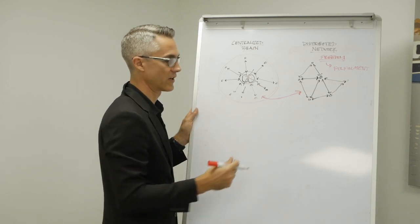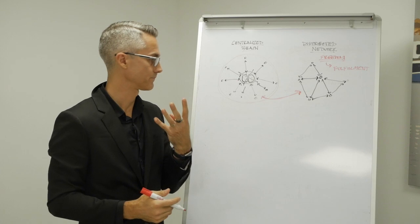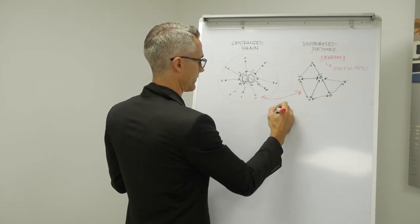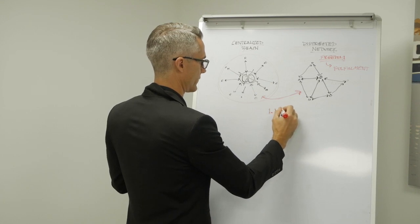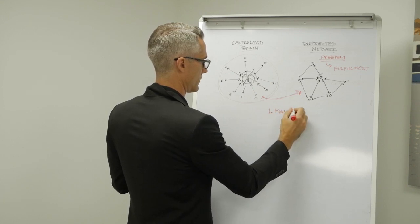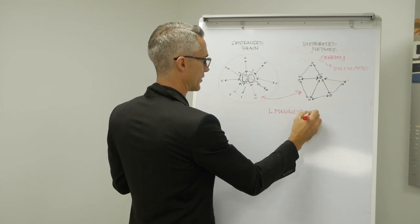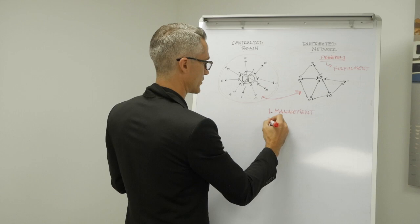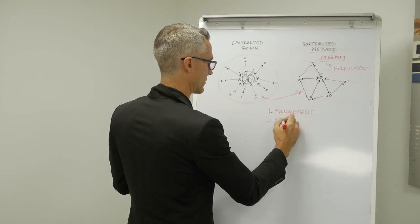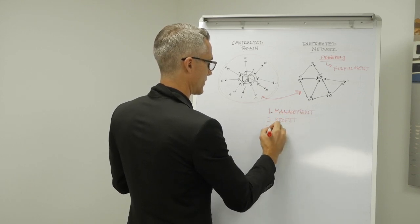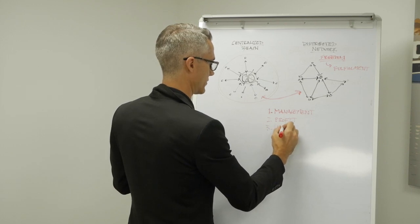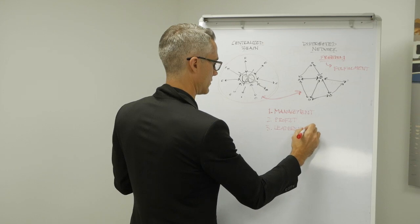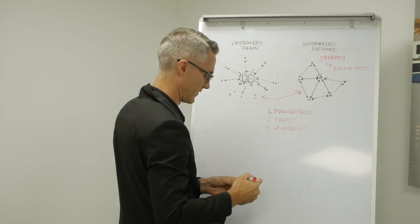So when we look at a distributed network, what does it take to do this? It happens through a focus on four key areas. These four key areas are number one, management, and this would be primarily project management. So this would be fulfillment. So systems for management. Number two, systems for profit. Number three, systems for leadership. And number four, systems for vision.